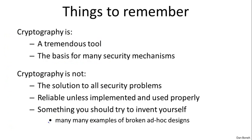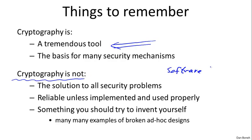There are a couple of important things to remember about cryptography. First of all, cryptography is a fantastic tool for protecting information in computer systems. However, it's also very important that cryptography has its limitations. Cryptography is really not the solution to all security problems. For example, if you have software bugs, then very often cryptography is not going to be able to help you. Similarly, if you're worried about social engineering attacks, where the attacker tries to fool the user into taking actions that are going to hurt the user, then cryptography is very often actually not going to help you. So it's very important that although it's a fabulous tool, it's not the solution to all security problems.